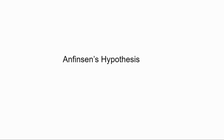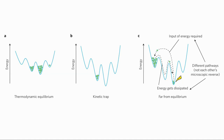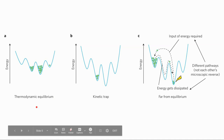We can approach the protein folding problem using key research insights. The first important one is Anfinsen's hypothesis, which states that the native structure of the protein is the thermodynamically most favorable state — the free energy minima — irrespective of the initial conformer. Whatever state you start with, the protein will eventually fold into one particular native state regardless of the pathway it takes. In other words, the native state depends only on the amino acid sequence and the conditions of the process, not the kinetic pathways.